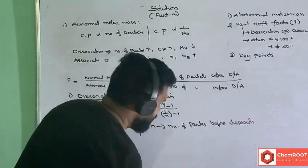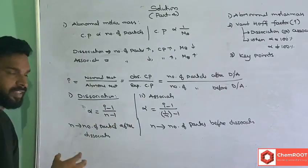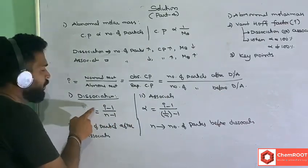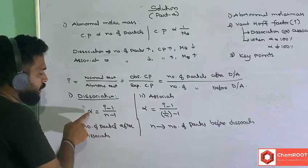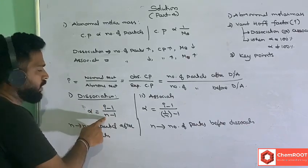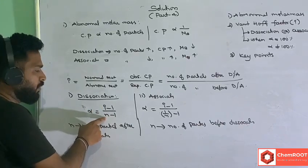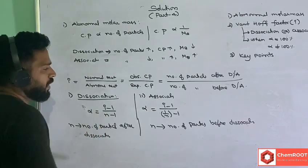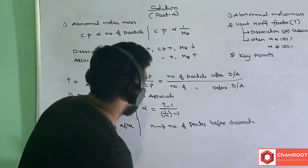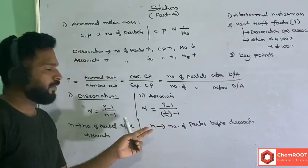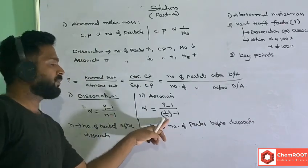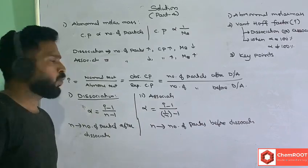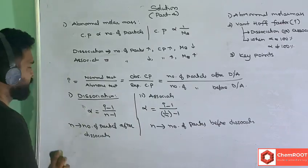In questions, if the alpha value is given, we can find the Van't Hoff factor (i) using alpha and by using the molecular formula we can find n, and then i. Same way for association. If they are giving dimer or trimer, we will know the n value. If alpha is given, we can find the Van't Hoff factor.